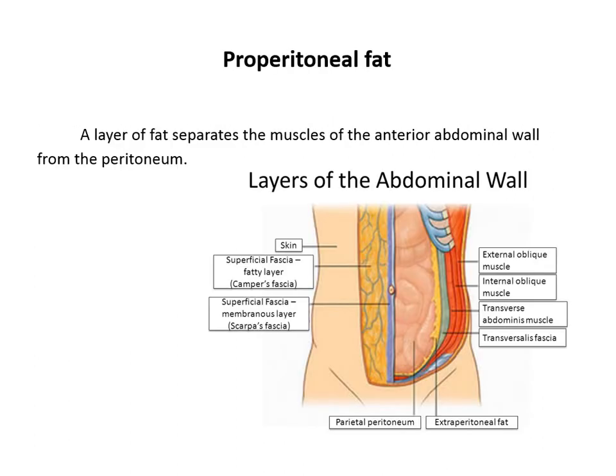There is a layer of fat called properitoneal fat between the flat abdominal muscles and the peritoneum. You can see it on the plain X-ray.